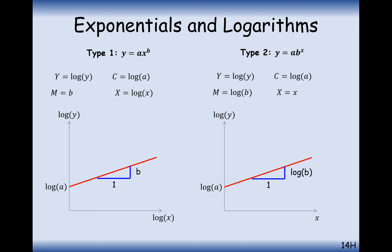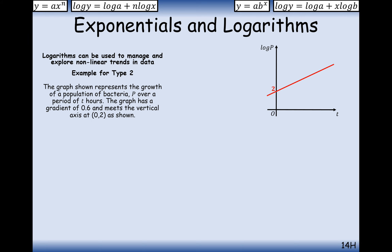Let's now look at type 2. The key difference here is that when we work out the gradient, we don't just leave that answer alone like we did previously — we need to do the inverse of a log of that value to work out what b is. The key defining feature is that we should see x on its own on the x-axis. This example represents the growth of a population of bacteria, which we'd expect to be exponential growth.